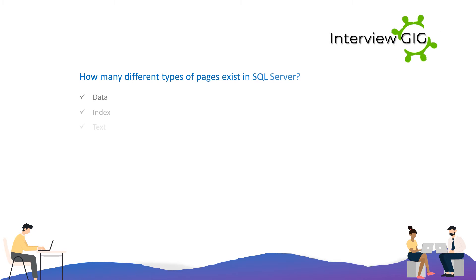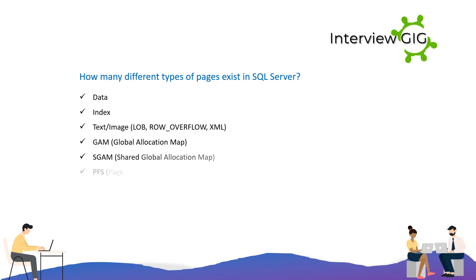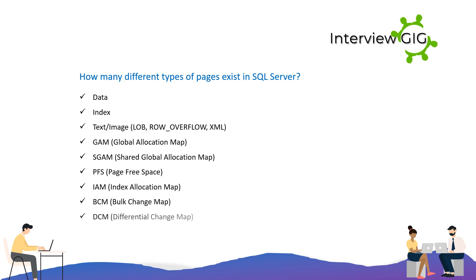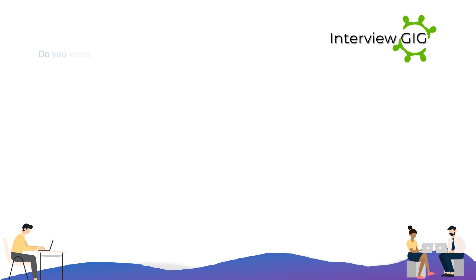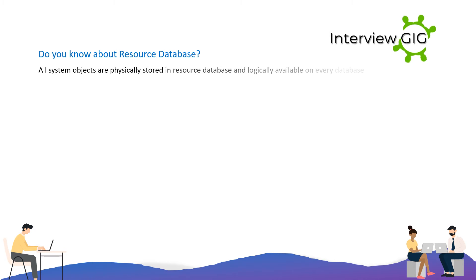Different types of pages in SQL Server include: data, index, text/image LOB, row overflow, XML, GAM (Global Allocation Map), SGAM (Shared Global Allocation Map), PFS (Page Free Space), IAM (Index Allocation Map), BCM (Bulk Change Map), and DCM (Differential Change Map). All system objects are physically stored in the resource database and logically available on every database. The resource database can speed up service packs and upgrades.